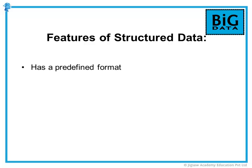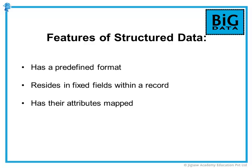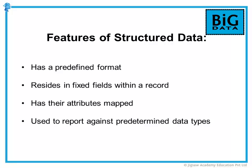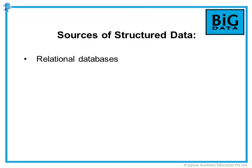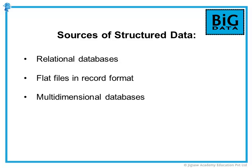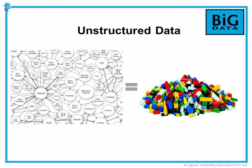Structured data is organized data in a predefined format. It resides in fixed fields within a record or file, with entities and their attributes mapped. It is used to query and report against predetermined data types. Sources of structured data include relational databases, flat files in record format, multi-dimensional databases, and legacy databases.